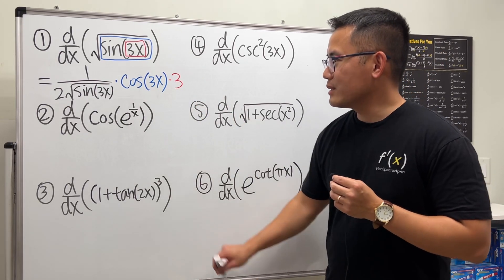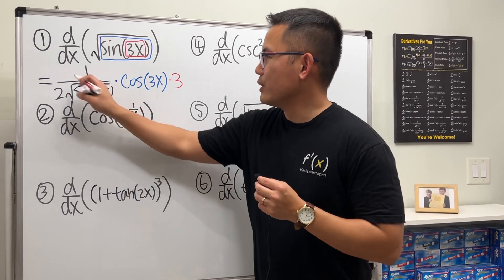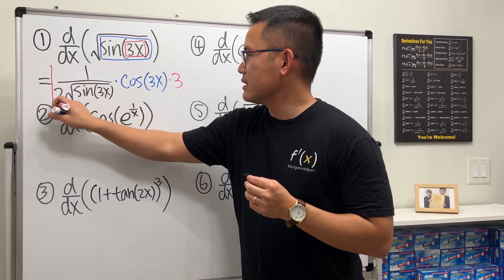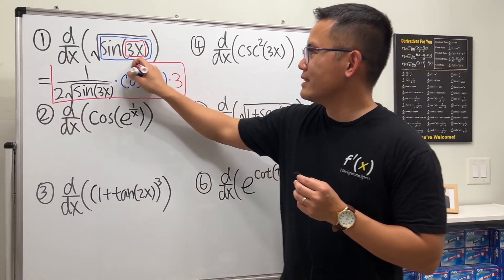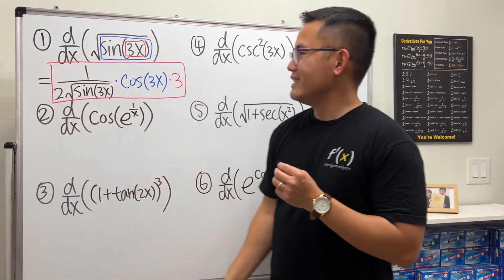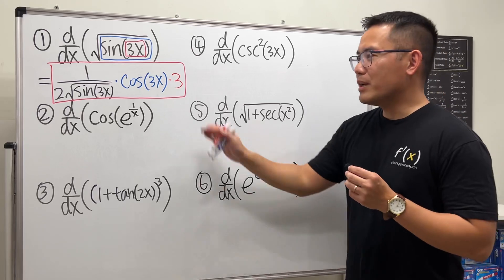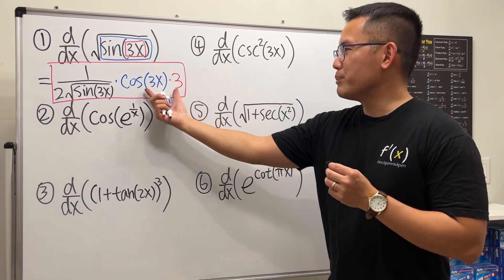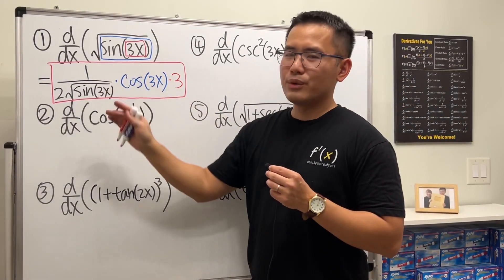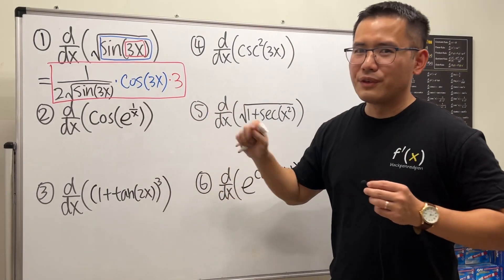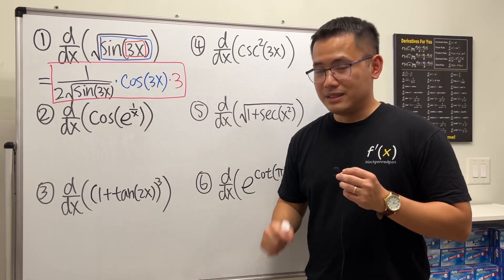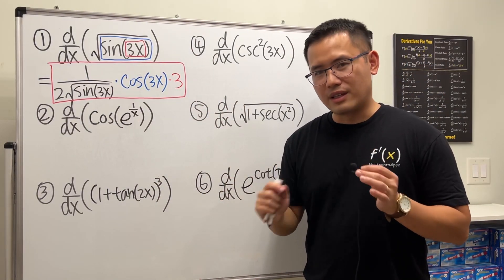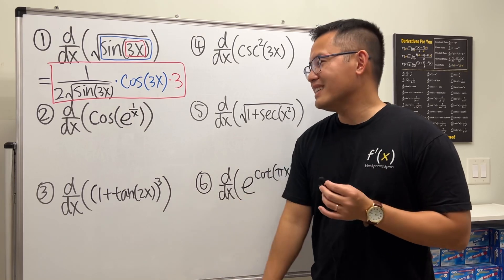Let's box this in red to make it stand out more. I'm not going to simplify — you can put this on top and all that — but let's just focus on the derivative, the calculus steps.